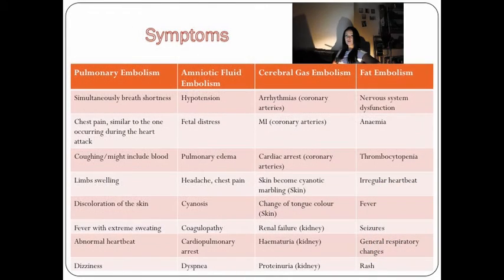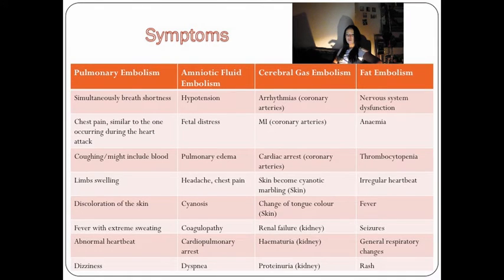Symptoms of pulmonary embolism include chest pain similar to what occurs during a heart attack, coughing, and limb swelling. Symptoms of amniotic fluid embolism include hypotension, fetal distress, and pulmonary edema. Symptoms of fat embolism include nervous system dysfunction, anemia, and irregular heartbeat.